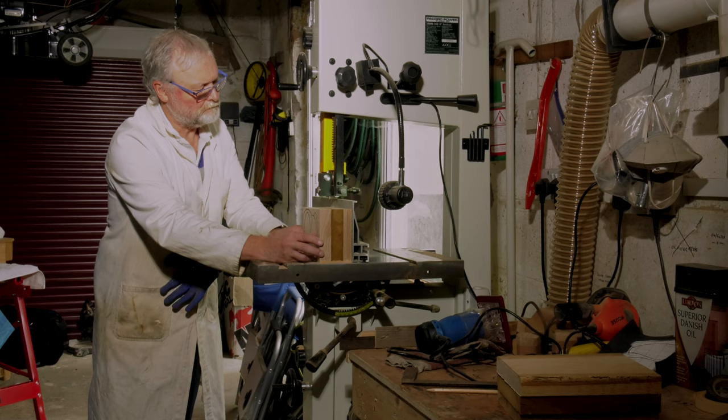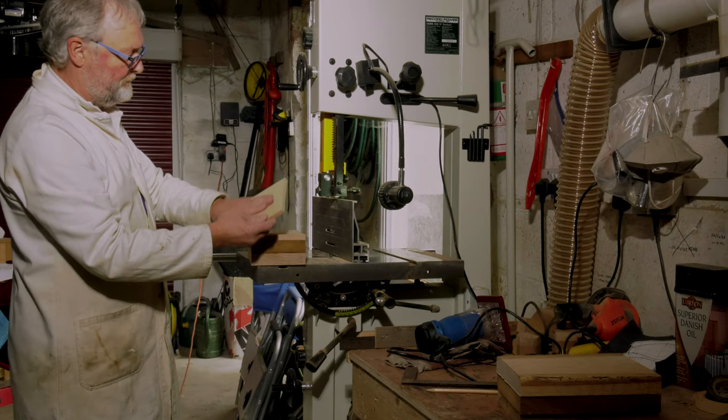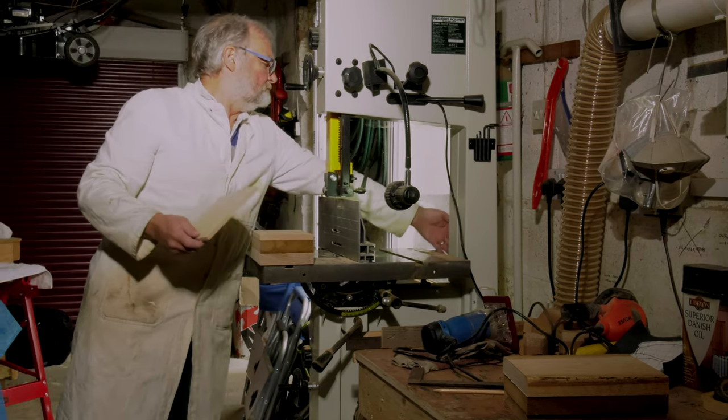Now the bandsaw is used to cut what will eventually be the back of the box from the wooden block. This is then placed to one side.